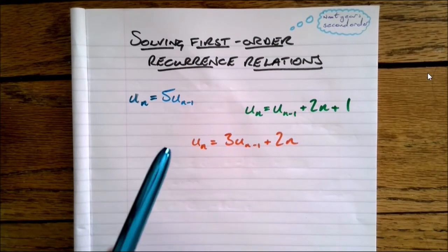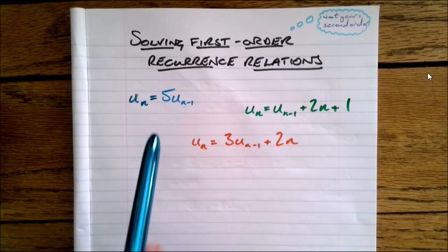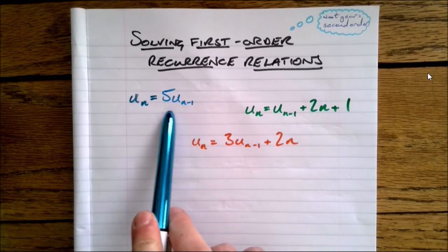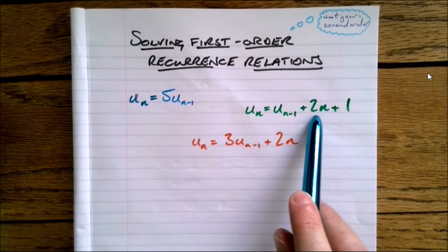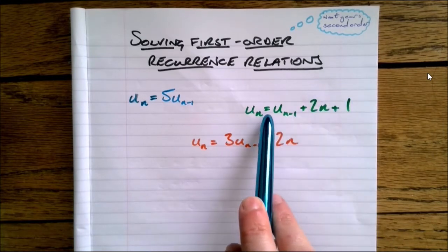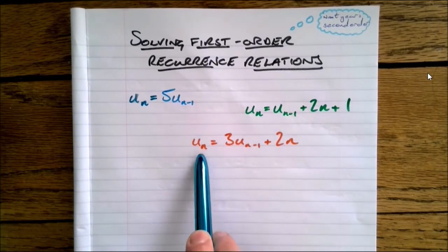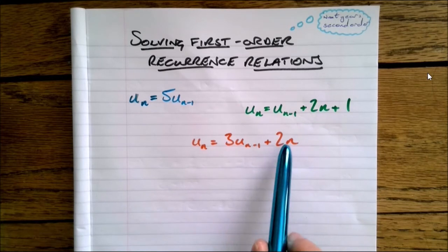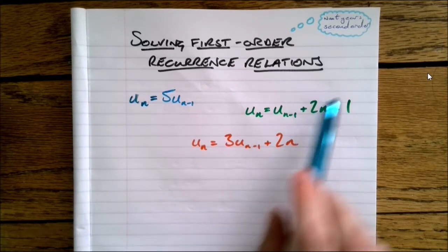Before we get stuck in, I want you to look at them and play spot the difference — not just the different colours. What are the fundamental differences? The first one is just multiplied by a number, with nothing added on the end. The second one has something added on the end but isn't multiplied by anything other than one. The third one has both: it's multiplied by something and has something added on at the end. The way we attack each of these different types is different.